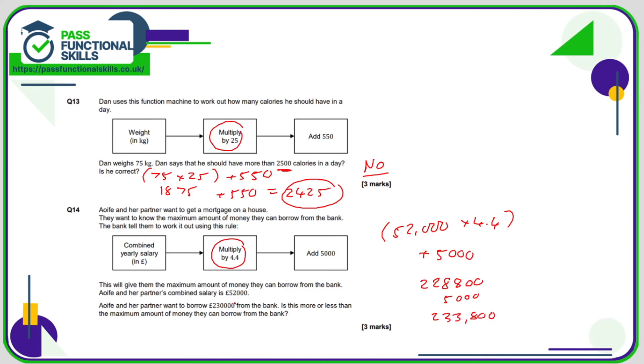And they want to borrow £230,000 from the bank. So is this more or less than the maximum? Well, they can borrow this figure here. So the amount that they want to borrow is less than the maximum that they can borrow from the bank.